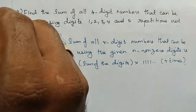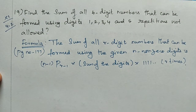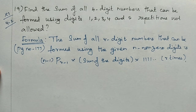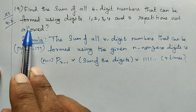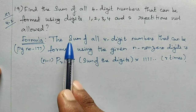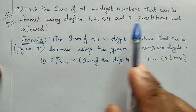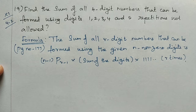Hi students. 11th standard, Exercise 4.2. Find the sum of all four-digit numbers that can be formed using the digits 1, 2, 3, 4, and 5 — that is, 5 digits used to form 4-digit numbers. Find the sum of all such digits. Repetition is not allowed. Find the sum of all four-digit numbers formed.